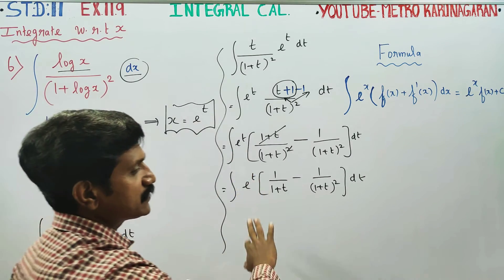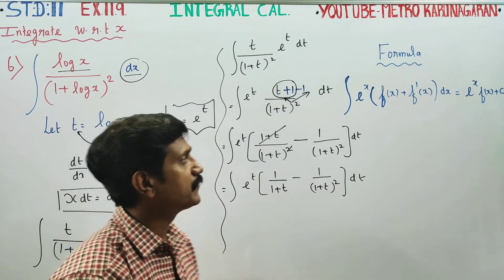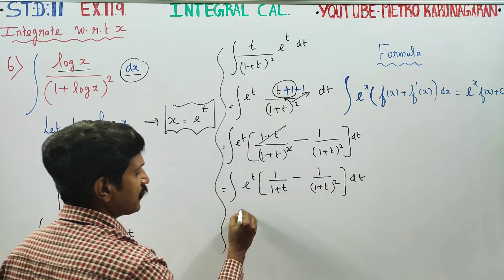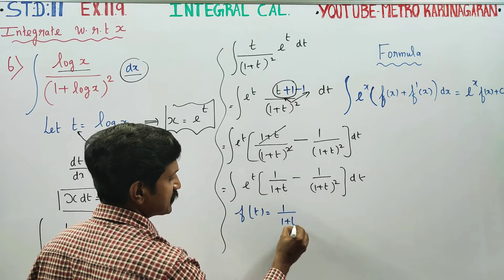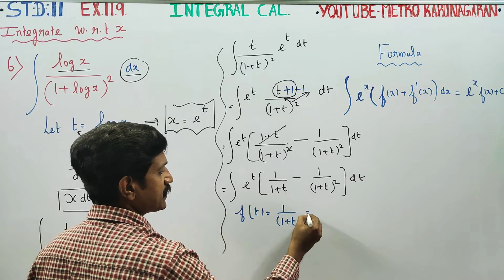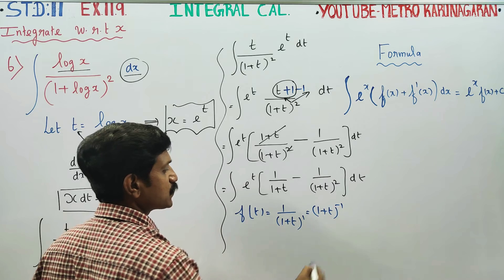This is the sum of sums. This is the derivative of the sum. Let f of t equal 1 by 1 plus t.